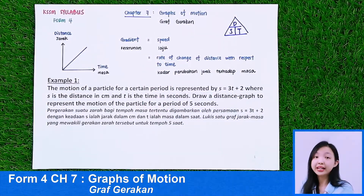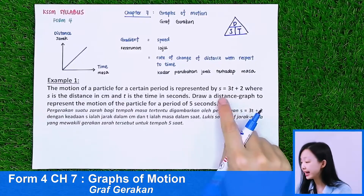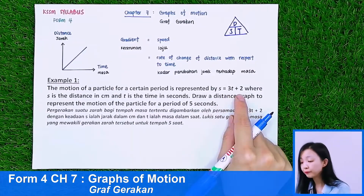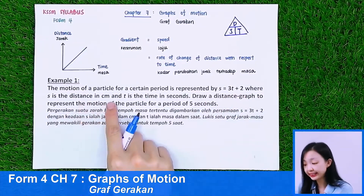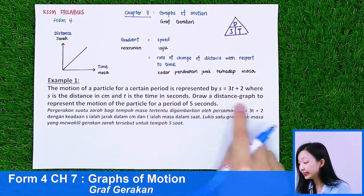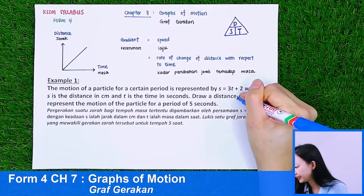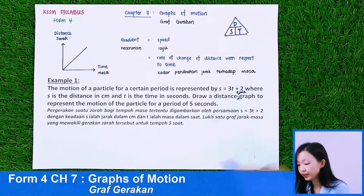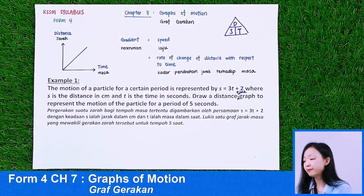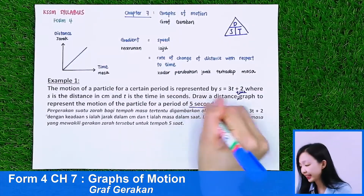In Example 1, we learn how to draw a distance-time graph. The motion of a particle for a certain period is represented by S equals 3T plus 2, where S is the distance in cm and T is the time in seconds. Draw a distance-time graph to represent the motion of the particle for a period of 5 seconds.